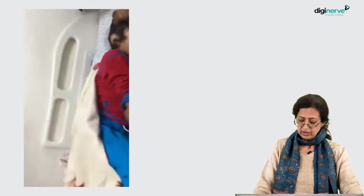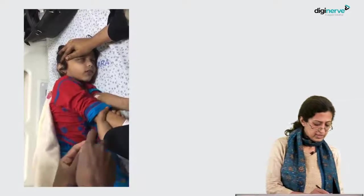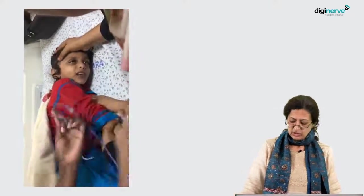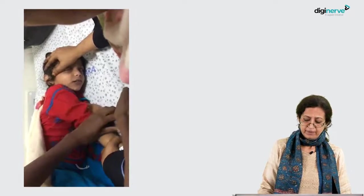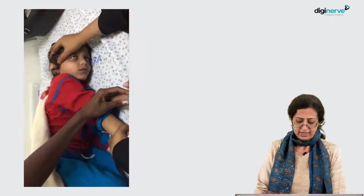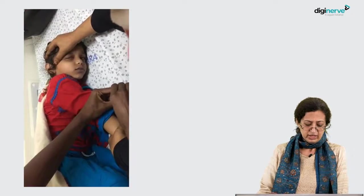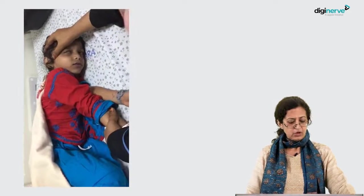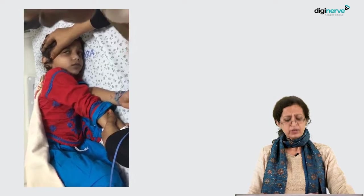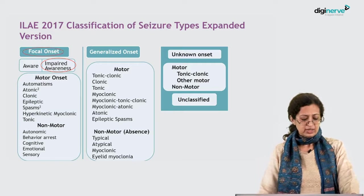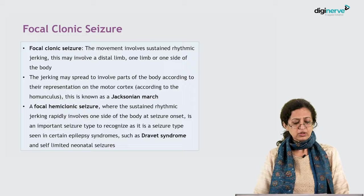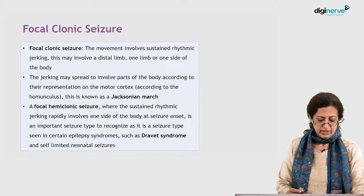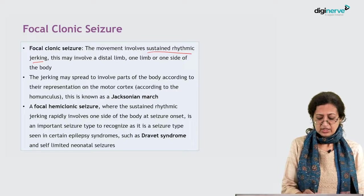In contrast to the previous video, this one shows right focal clonic seizures with impaired awareness. Besides the face, the right arm and leg are also involved, there is intermittent upward rolling of the eyeball, and the child is not aware of the event. The episode is prolonged. This is classified as focal onset with impaired awareness, with clonic as the most prominent feature — focal clonic seizures.